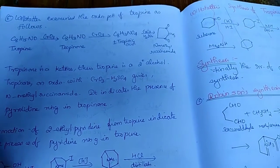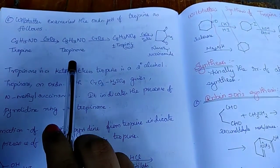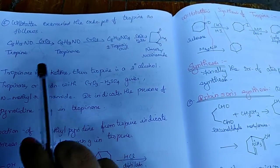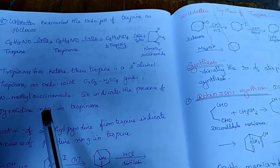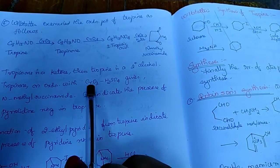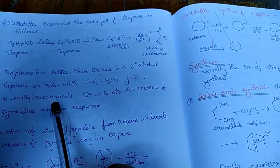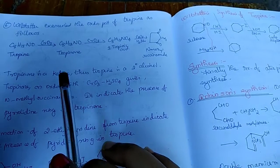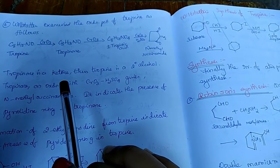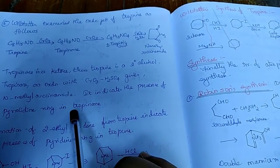As we said earlier, tropine on oxidation we get a ketone tropinone. So the tropine is a secondary alcohol. And tropine on oxidation gives N-methylsuccinamide finally. This indicates that tropine is having a pyrrolidine ring in tropine.